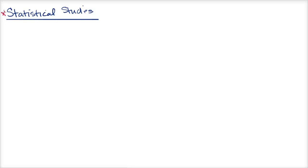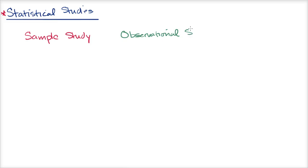Let's talk about the main types of statistical studies. You can have a sample study, and we've already talked about this in several videos, but we'll go over it again in this one. You can have an observational study, or you can have an experiment. Let's go through each of these — always pause this video and see if you can think about what these words likely mean, or you might already know.